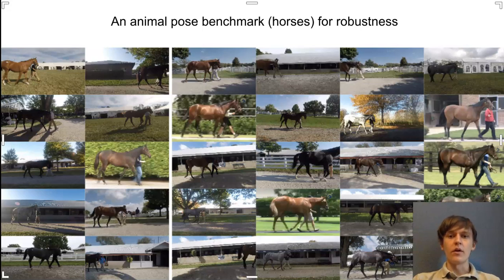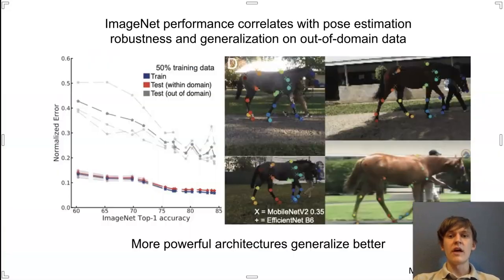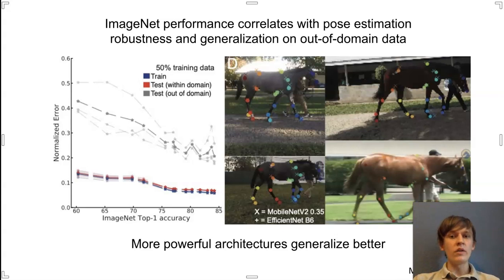For our paper, we focused on a few different techniques to improve robustness on Horse 10. We first evaluated the importance of model architecture. Using DeepLabCut, a common pose estimation algorithm available online, we incorporated different model backbones into the convolutional architecture. Our core finding is that if you use model backbones that perform better on ImageNet, not only will you perform better on within-domain data for Horse 10, you'll perform much better on out-of-domain data for Horse 10.